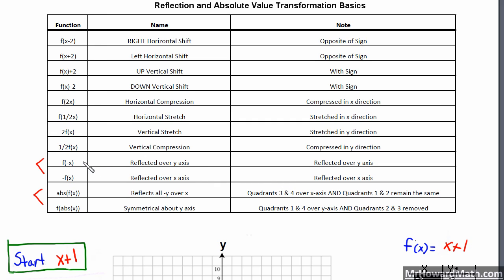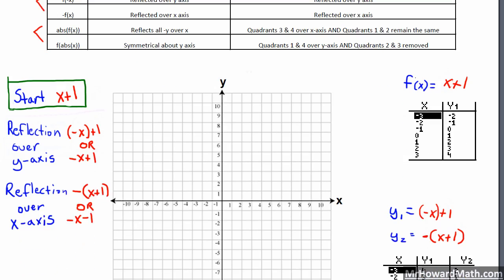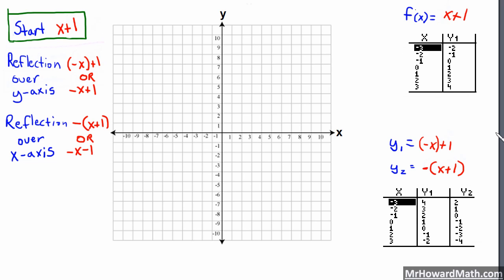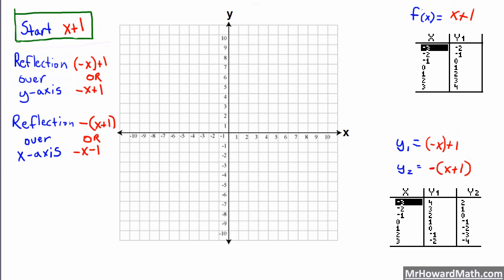First of all we'll talk about our reflection. When we are talking about a negative sign being in the parentheses with X, we will reflect over the Y-axis. When we are talking about a negative sign for essentially the whole function, or outside the parentheses with X, we will be reflecting over the X-axis. We're going to use a line this time because the quadratic parent function really you're just not going to be able to see all the transformations — we could see one but not both.